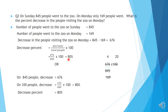The same decrease percent can be found using the unitary method. On Sunday 845 people came, and the decrease was 676. So on 100 people, how much decrease? 676 divided by 845 into 100, which also gives 80 percent. Any method you choose, the answer will be the same.